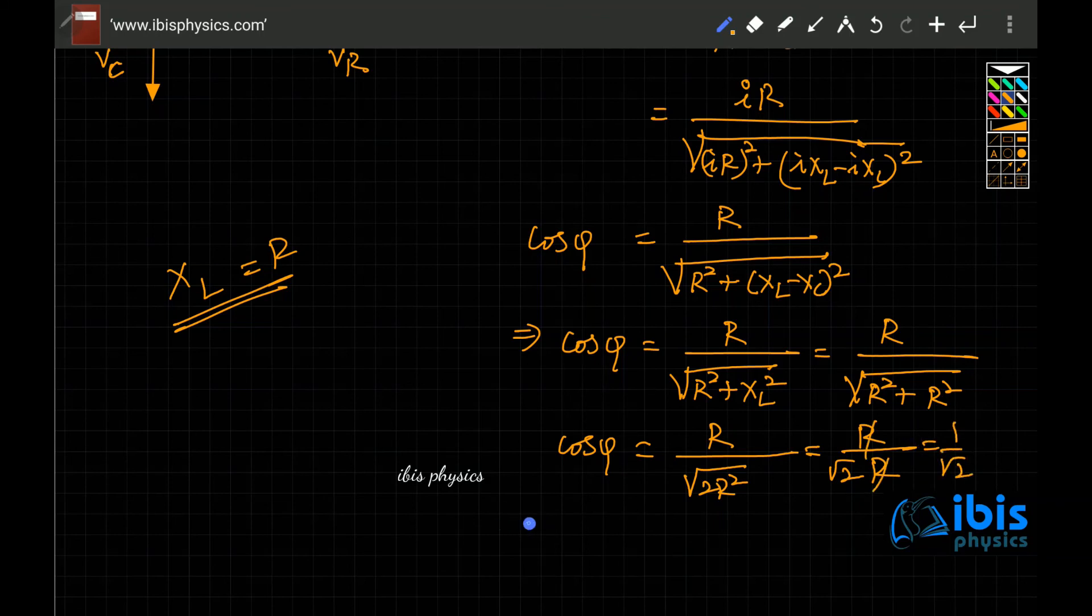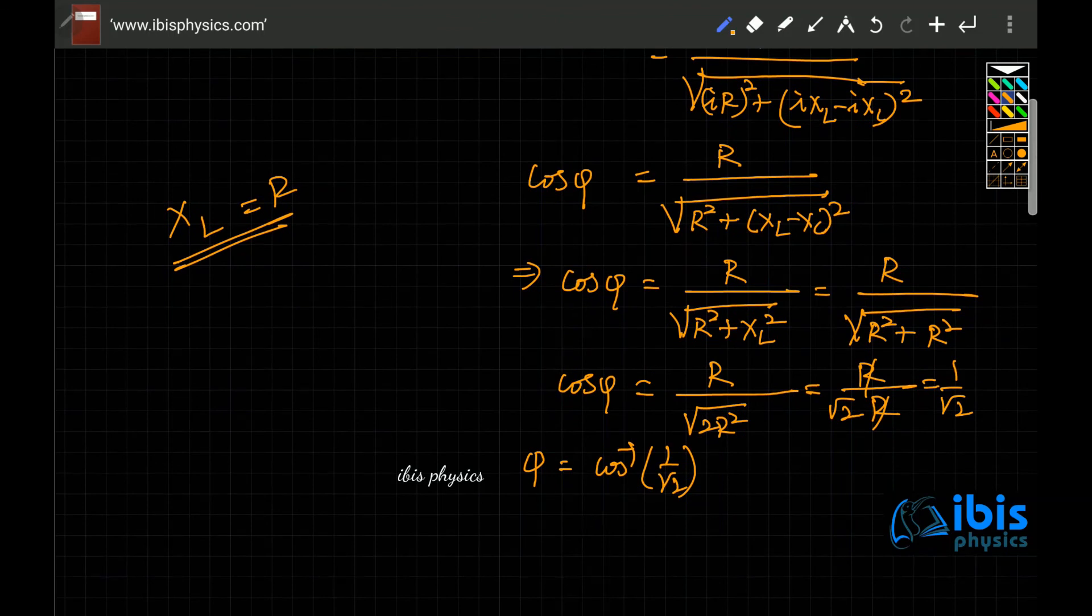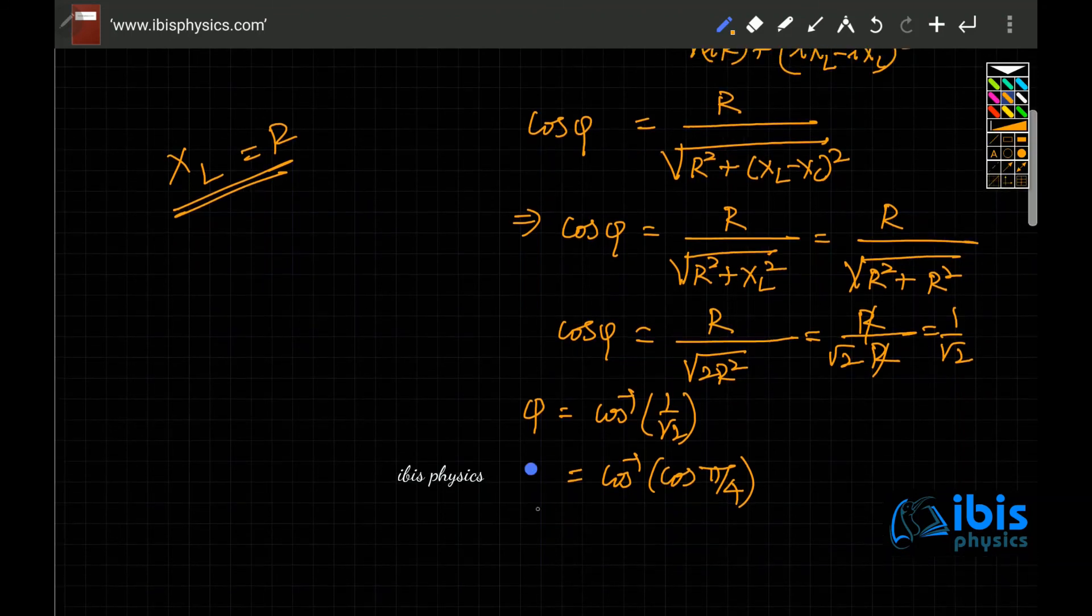If cos phi is equal to 1 by root 2, phi is equal to cos inverse of 1 by root 2, which is cos inverse of cos pi by 4 or 45 degrees. Hence the phase, the net phase in the circuit is pi by 4 radians.